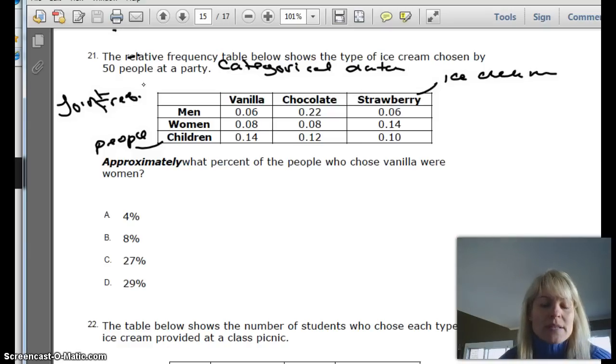And so we have this ice cream, and it tells us there's 50 people at the party, right? And so we're trying to find what percent of the people who chose vanilla were women. So we don't really need to worry about any part of this data except for vanilla and women. So we know by looking at these two things that there are 0.08 women who prefer vanilla.